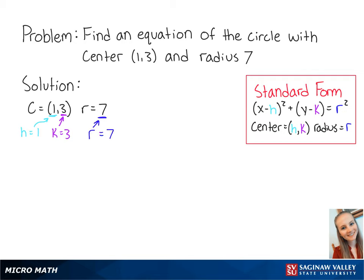So using the standard form, we can write our equation as (x - 1)² + (y - 3)² = 7².